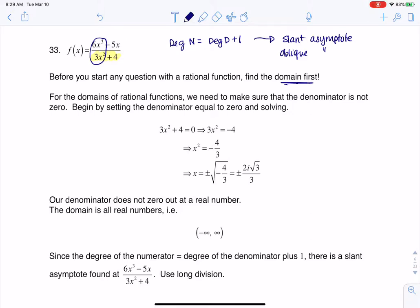When I tried to set it equal to 0, when I had 3x squared plus 4 equaling 0, and I subtracted 4 from both sides, you see I'm getting 3x squared equals negative 4. When I divide both sides by 3, I get x squared equals negative 4 thirds. Well, there's no real number that squares to a negative number.